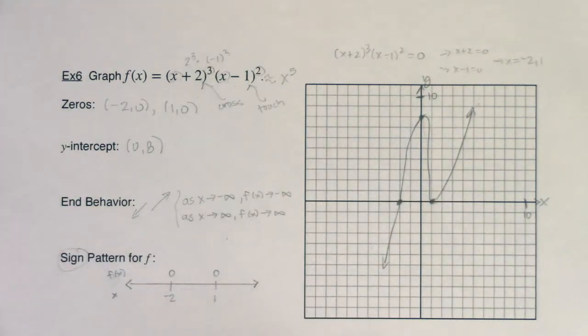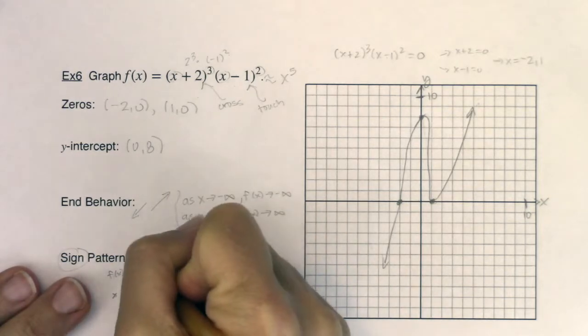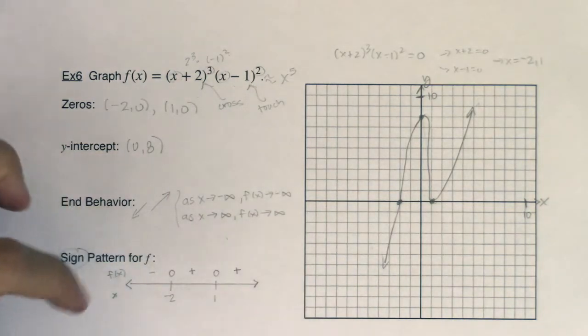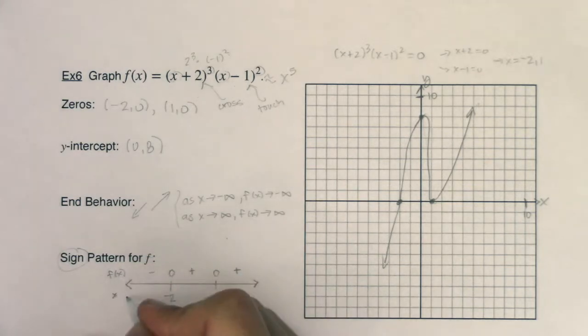So now I'm going to actually write in my sign pattern. And then I want us to see if we can figure out how on earth I got it. So we're going to go plus, plus, minus. Or I should say minus, plus, plus as I move left to right. So how on earth did I get that? I want you to take a look at these signs. Negative, positive, positive. Negative between x being negative infinity and negative 2. There's a positive sign between x being negative 2 and 1. And then there's a positive sign from 1 to infinity.